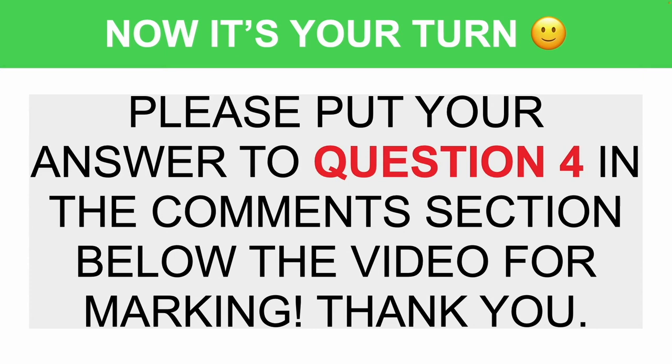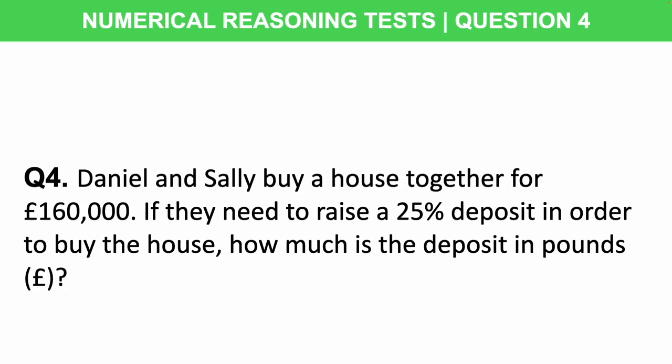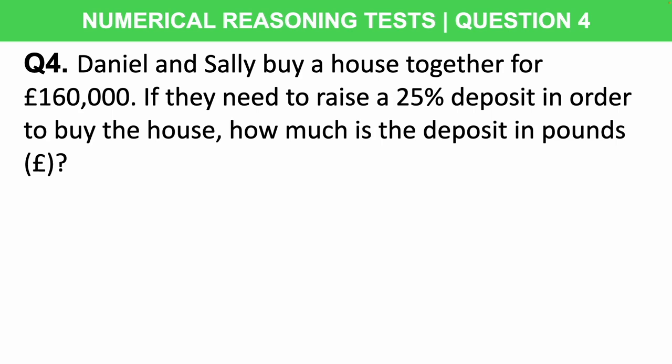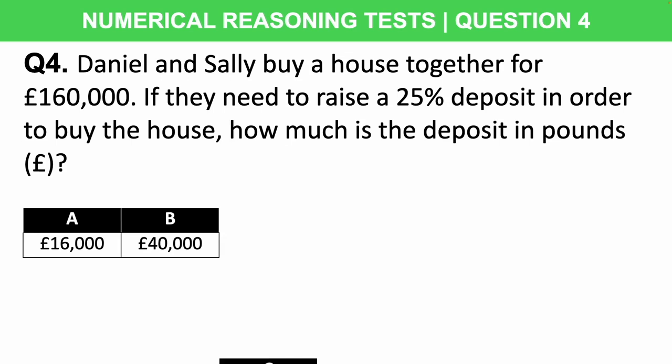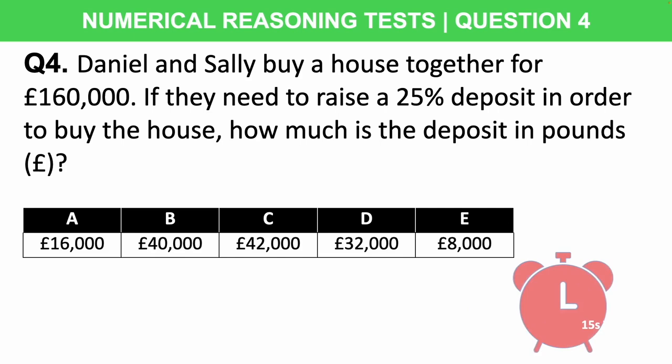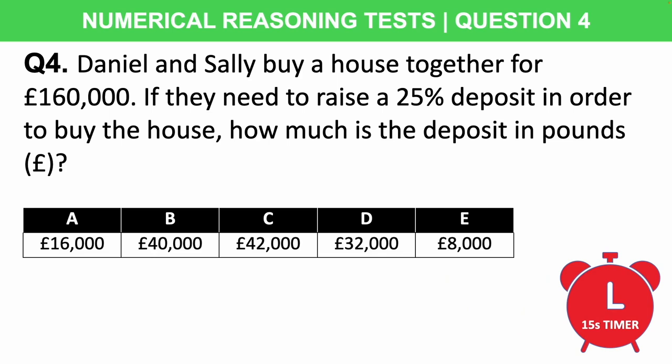Question 4: Daniel and Sally buy a house together for £160,000. If they need to raise a 25% deposit to buy the house, how much is the deposit in pounds? Is it A: £16,000, B: £40,000, C: £42,000, D: £32,000, or E: £8,000? You'll want to be able to answer these questions in under 15 seconds. Pause the video if you need more time, and practise to increase your speed.